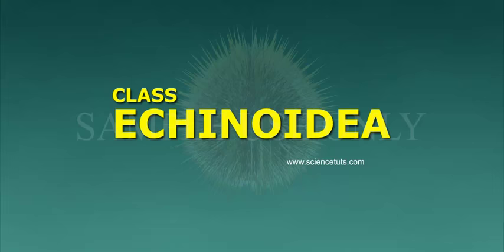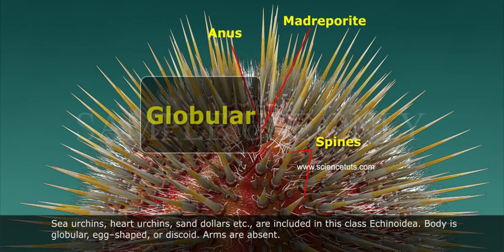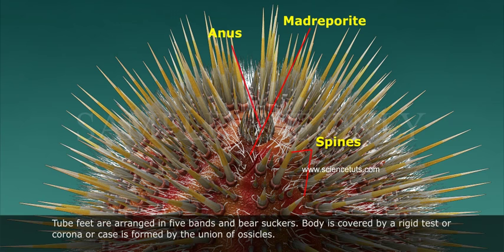Class Echinoidea includes sea urchins, heart urchins, sand dollars, etc. Body is globular, egg-shaped, or discoid. Arms are absent. Tube feet are arranged in five bands and bear suckers. Body is covered by a rigid test or corona formed by the union of ossicles.